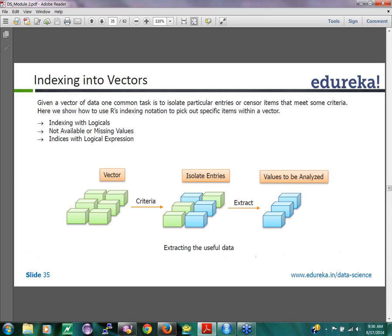So we just saw how indexing is done. Given a vector of data, one common task is to isolate particular entries that meet a given criteria. So I have a vector. I want to pick only a set of entries that meet a given criteria and how do I do this? Here in R, we show how to use the R indexing notation to pick out specific items in the vector.